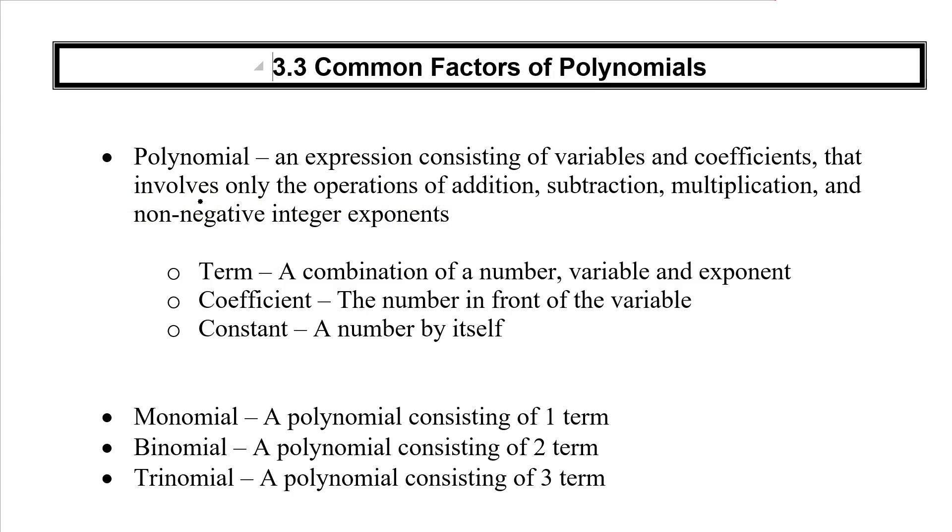Here are some words you might be familiar with when you talk about polynomials. We've got a term - a combination of a number, variable, and exponent. Coefficient is the number in front of the variable. And sometimes we'll see a number just by itself - we call that a constant.